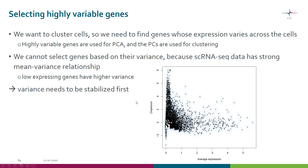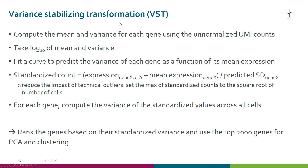Therefore, we need to stabilize the variance first — we need to get rid of this mean-variance relationship. For that we have variance stabilizing transformation, or VST. First we compute the mean and variance for each gene using the unnormalized UMI counts.